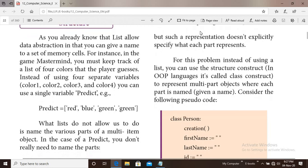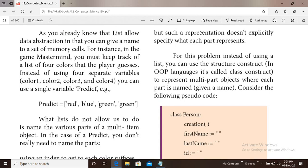Next one is data abstraction using structure. As you already know, list allows data abstraction where you can give a name to a set of memory cells. This is data abstraction: hiding the entire details and showing only the essential detail. For instance, in a game like Mastermind, you must keep track of a list of four colors the player guesses. Instead of using four separate variables, you can use a single variable, that is the list.